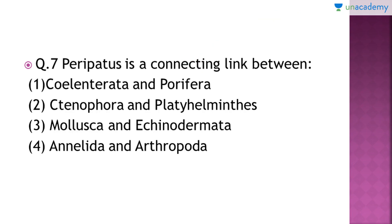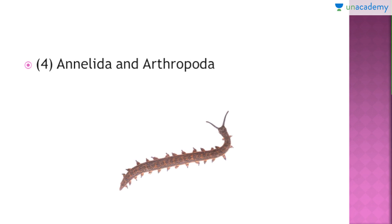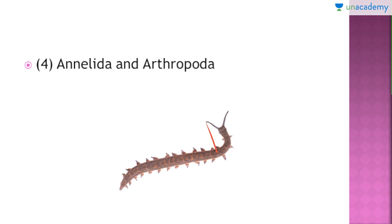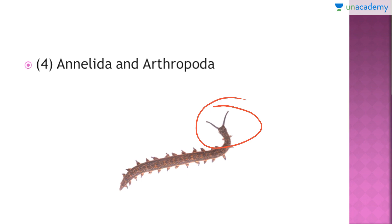Moving to question number 7: Peripatus is a connecting link between which of the two phyla? The right answer is option number 4, that is Annelida and Arthropoda. Peripatus has characteristics similar to both Annelida and Arthropoda. Characteristics matching Annelida include nephridia for excretion. Characteristics matching Arthropoda include claws on legs, haemocoel, trachea for respiration, and a head with eyes and antennae. That is why it is called the connecting link between phylum Annelida and Arthropoda.